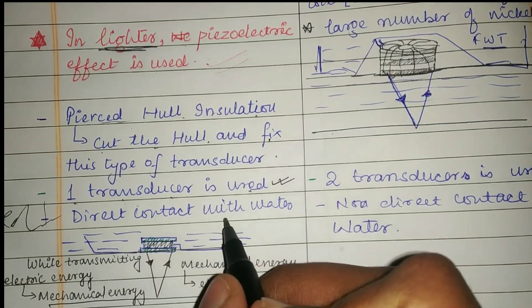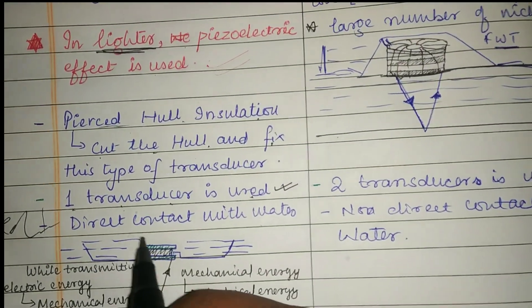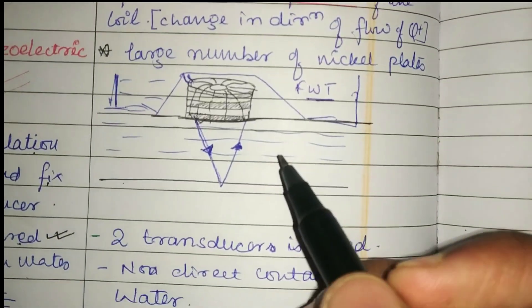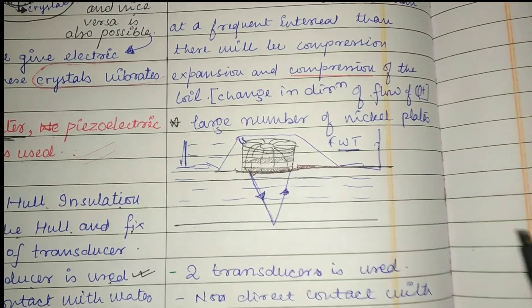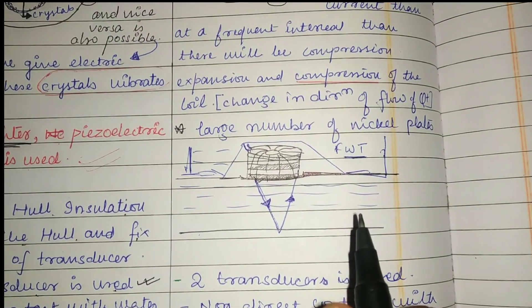These types of transducers are in direct contact with water. Magnetostrictive transducers are not in direct contact with water because they are not pierced hull.